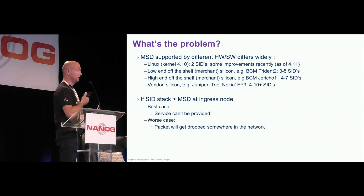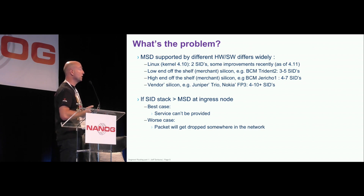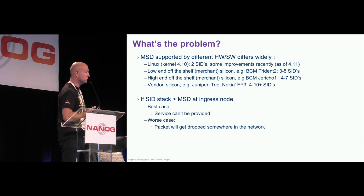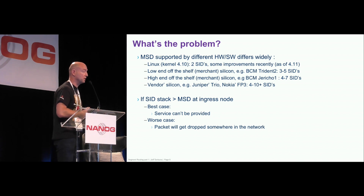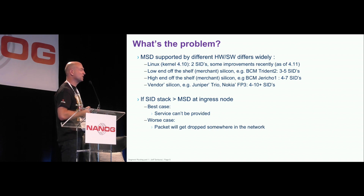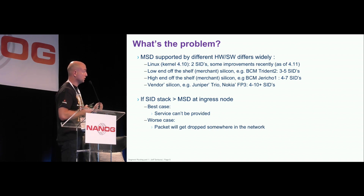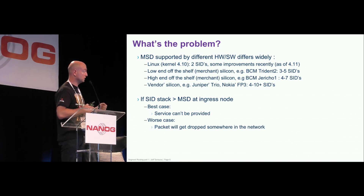So what's the problem? There's a wide variety and depth of MSDs supported. Looking at Linux up to 4.10, they could do only two. In 4.11 there were improvements — questionable improvements from some perspectives. On low-end silicon, three to five labels. If you take latest Broadcom today, probably you're at four labels. High-end silicon like Jericho 1 started at one, today it's seven. Even when running the same generation of silicon, depending on the revision of your microcode, you might have different numbers of SIDs supported.